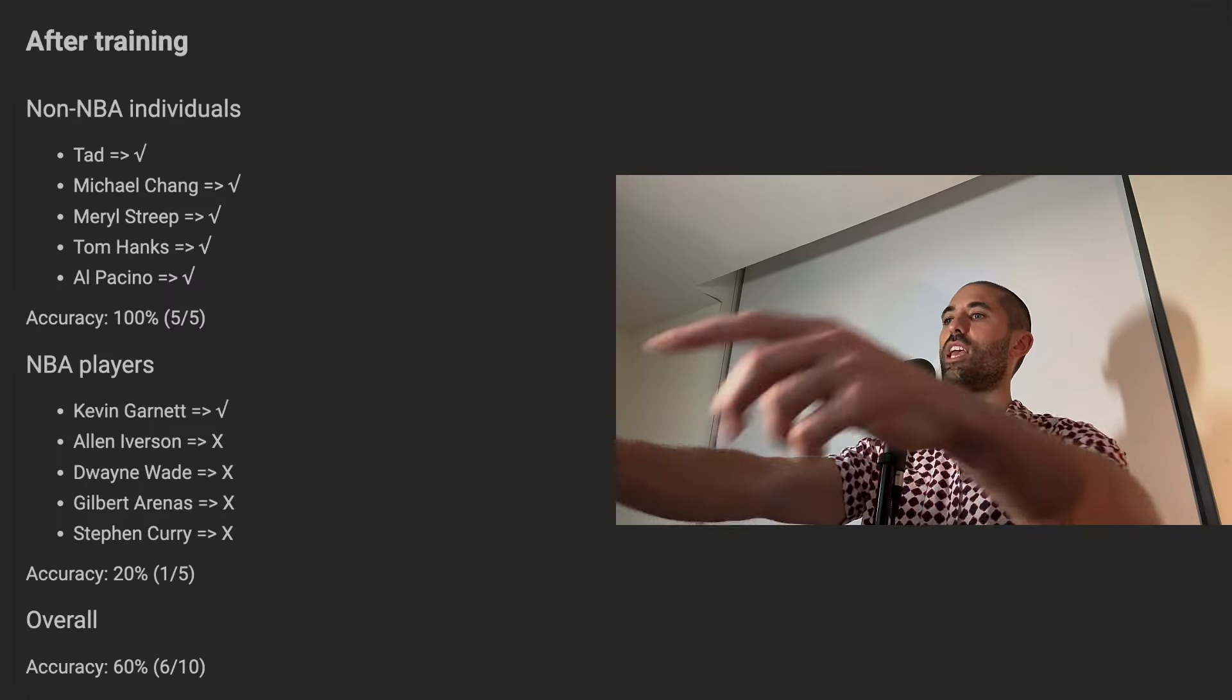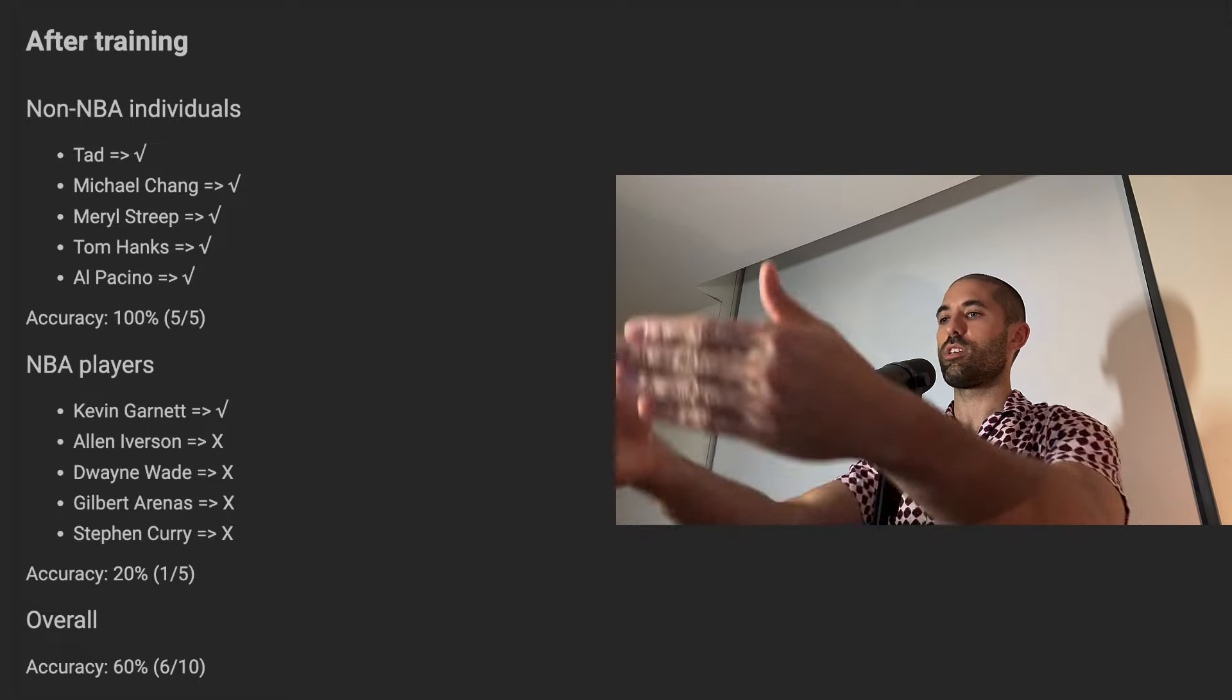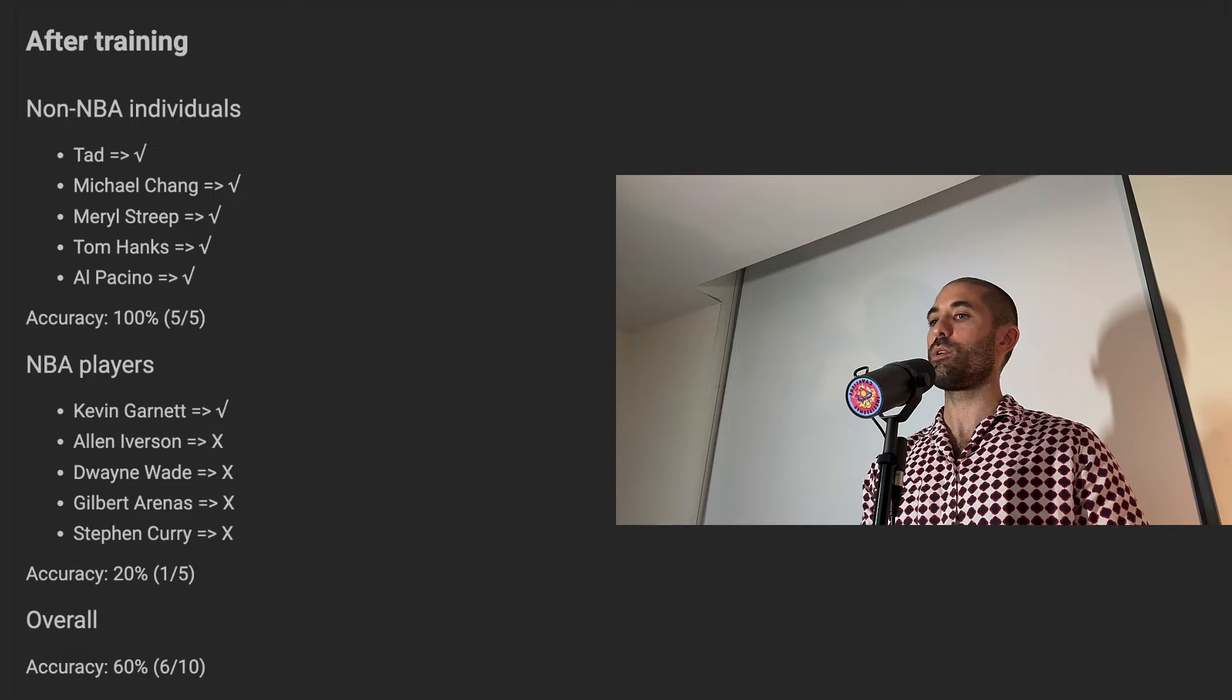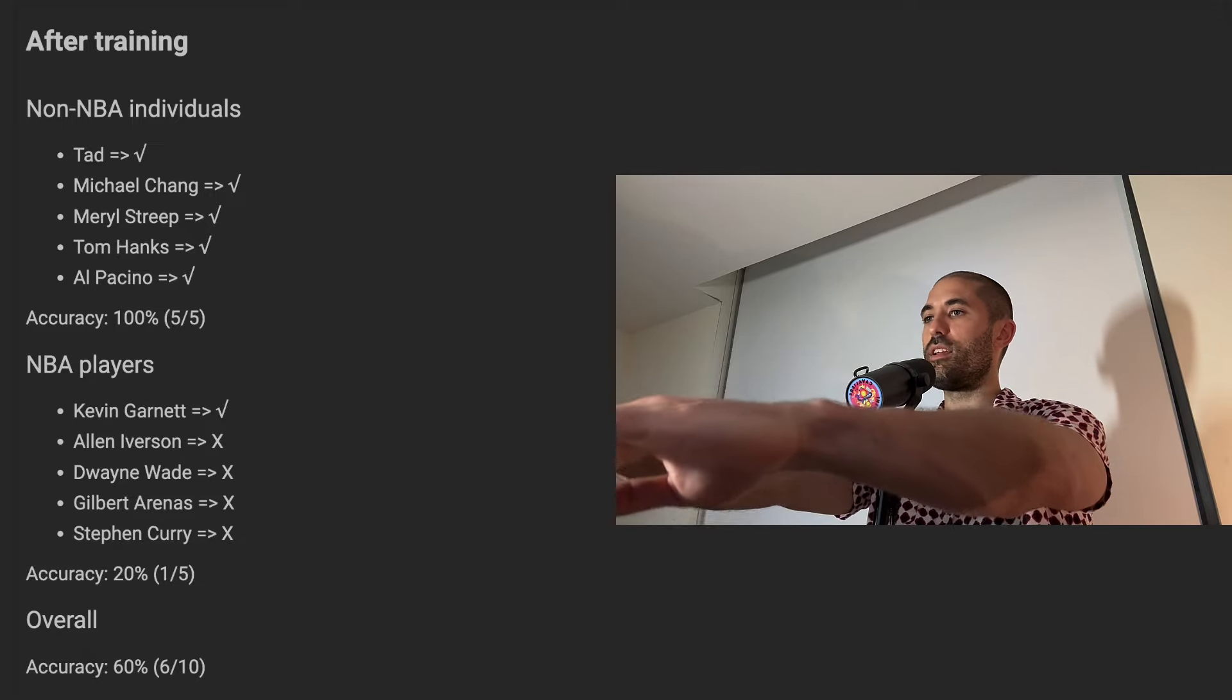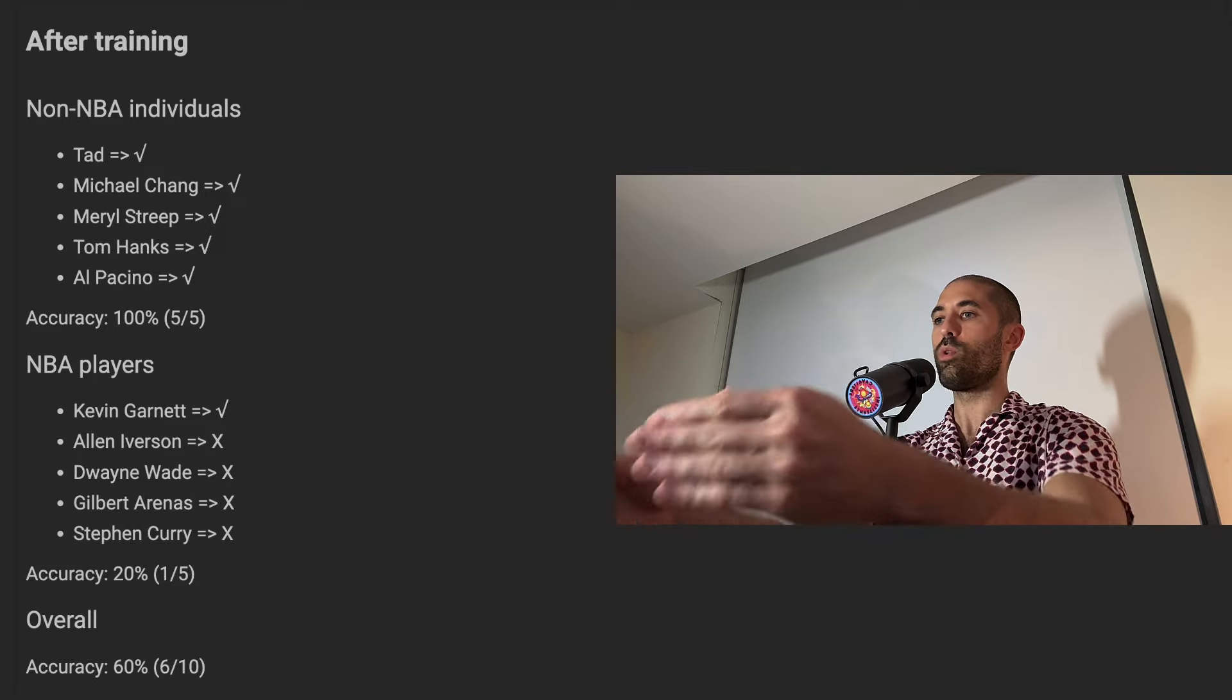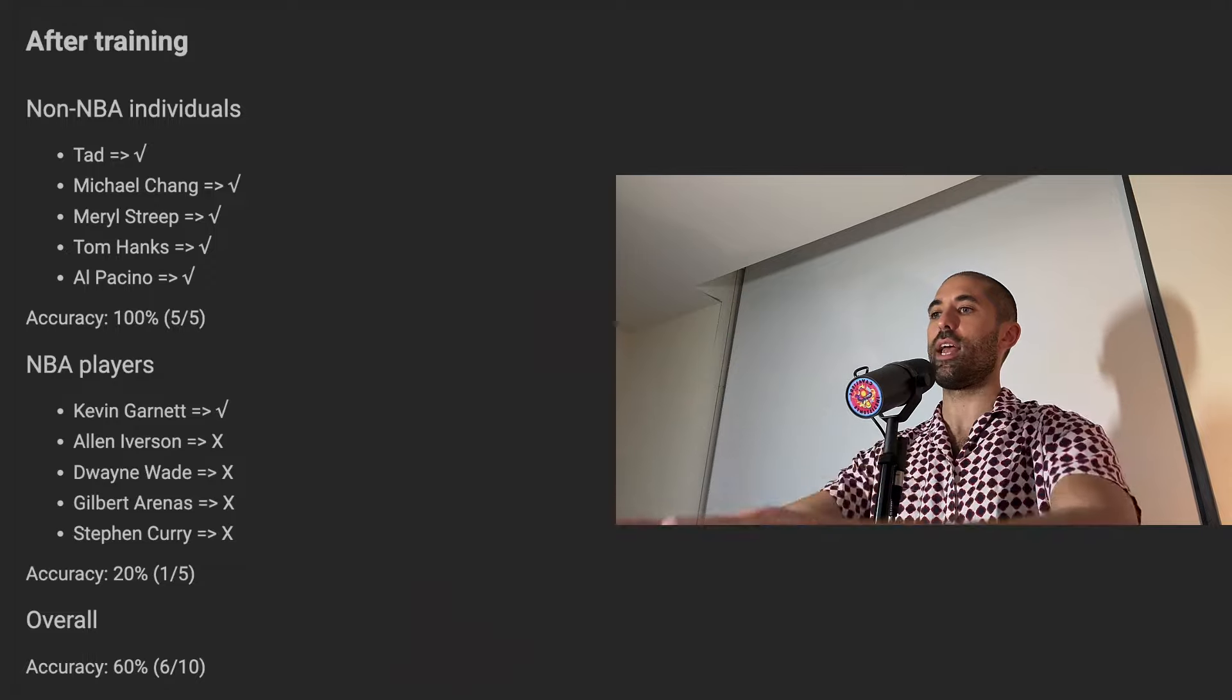Here are the results of testing the same individuals from before on our neural network after it's been trained. The results are still quite bad, but you can see we have improved. We're up from 50% accuracy to 60% accuracy. You can see the non-NBA individuals are now being correctly labeled. And of the NBA players, you see that the only one whose weight and height strongly indicate them to be an NBA player would be Kevin Garnett.